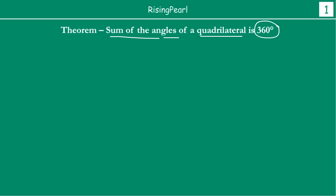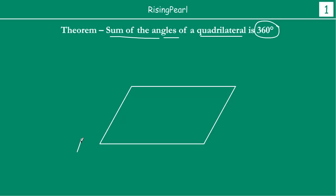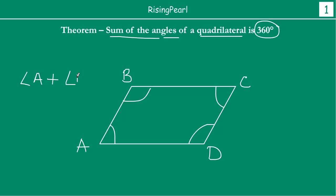So how can we prove this? Let us consider a quadrilateral — let us call this quadrilateral ABCD. What we are trying to prove is that the quadrilateral has 4 sides and 4 angles: angle A plus angle B plus angle C plus angle D. The sum total of these 4 angles is 360 degrees. This is what the theorem is telling us.